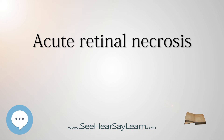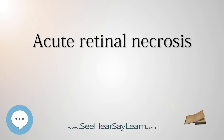Diagnosis of ARN is outlined by the American Uveitis Society. Though most diagnoses are made by clinical features, a physician may take a vitreous sample and test it for herpes markers. Common lab tests include viral culture, viral PCR, direct/indirect immunofluorescence, and viral antibody measurement. The American Uveitis Society guidelines for ARN diagnosis include: retinal necrosis with one or more focus points in the peripheral retina; rapid progression in the absence of antiviral treatment; spreading to the surroundings; buildup of blood vessels; and inflammation of the vitreous.